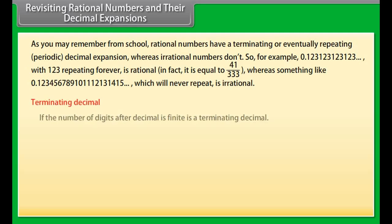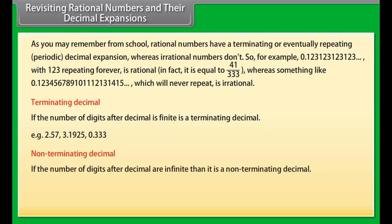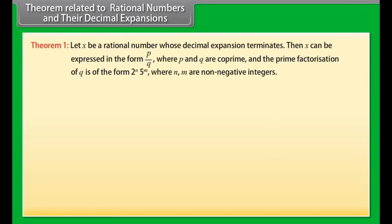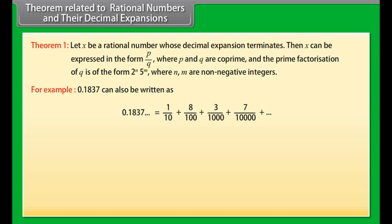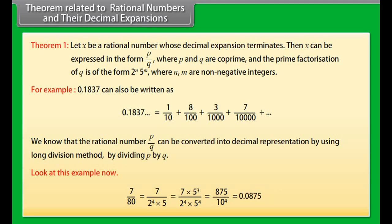Revisiting rational numbers and their decimal expansions. Rational numbers have a terminating or eventually repeating periodic decimal expansion, whereas irrational numbers don't. For example, 0.123123123... with 1-2-3 repeating forever is rational — it equals 41 upon 333. Whereas something like 0.123456789101112... which will never repeat is irrational. A terminating decimal is one where the number of digits after the decimal point is finite; for example, 2.57 or 3.1925. A non-terminating decimal has infinite digits after the decimal point.